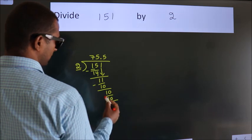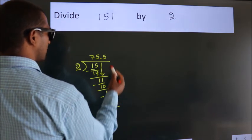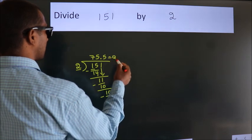Now, we subtract. We get 0. We got remainder 0. So, this is our quotient.